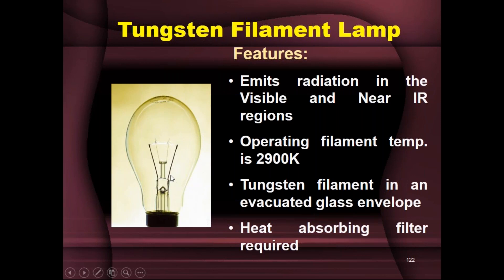Since the bulb is made of glass, you can get only visible radiation. Any UV radiation emitted with wavelength shorter than 320 nanometers will be absorbed by the glass. So this tungsten filament lamp emits radiation in the visible and near-IR regions. The energy distribution of this lamp is temperature dependent, and in most cases the operating filament temperature is 2,900 Kelvin, at which the lamp emits in the visible and near-IR regions.